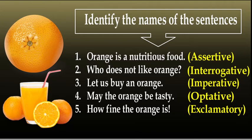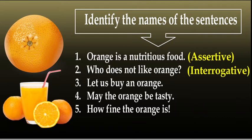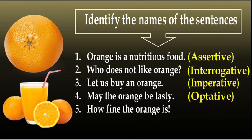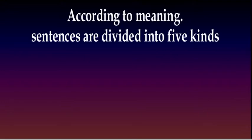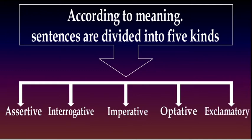So, how many sentences are there? There are five sentences. Number one: Assertive. Number two: Interrogative. Number three: Imperative. Number four: Optative. Number five: Exclamatory. According to meaning, sentences are divided into five kinds: assertive, interrogative, imperative, optative, and exclamatory.